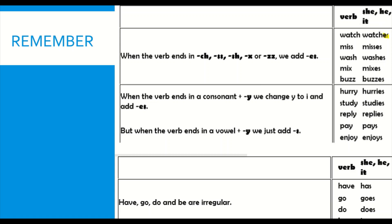We start with ES. We use ES at the end when the verb ends in CH, SS, SH, X, or Z. For example: watch becomes watches, miss becomes misses, wash becomes washes, mix becomes mixes, and buzz becomes buzzes. In case number two we have IES. We use IES when we have a consonant plus Y — the Y becomes I and we add ES. For example: hurry becomes hurries, study becomes studies, reply becomes replies.